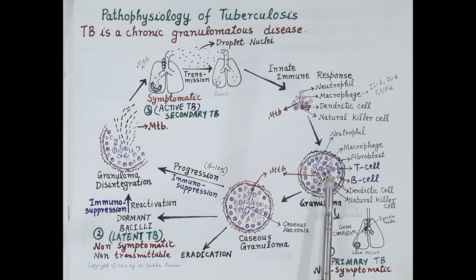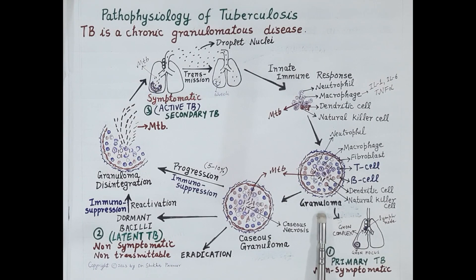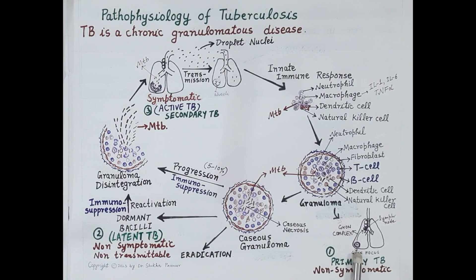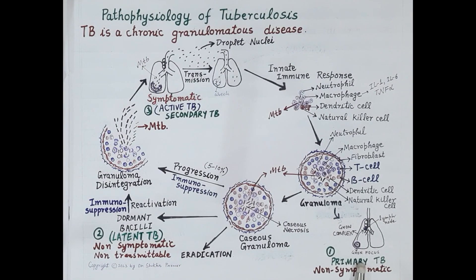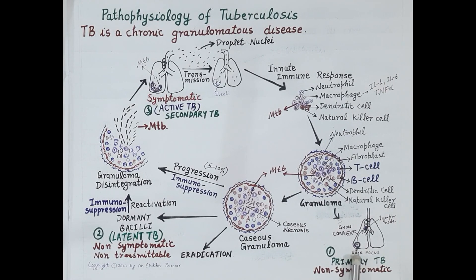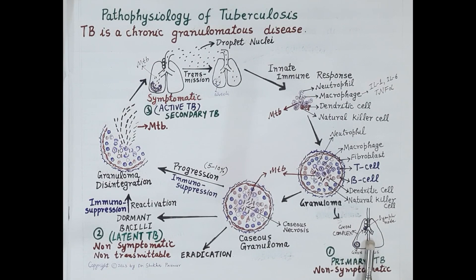Immune cells organize themselves in a spherical structure around the tubercle bacilli, which prevents the spread of bacilli outside the lesion — the bacteria is locked in the lesion. This lesion or wound is termed as a granuloma. Initially this granuloma is formed in the lower or middle lobe of the lung just below the pleura and is termed as Ghon focus. Macrophages can spread this infection to the local lymph nodes, so the Ghon focus along with the infected lymph node is termed as the Ghon complex.